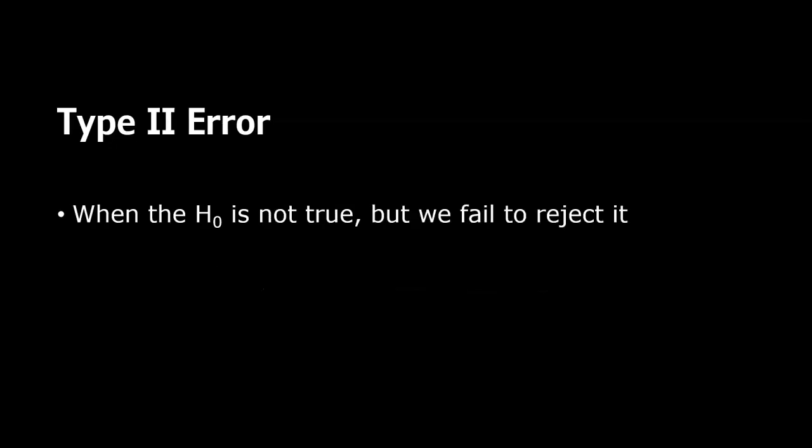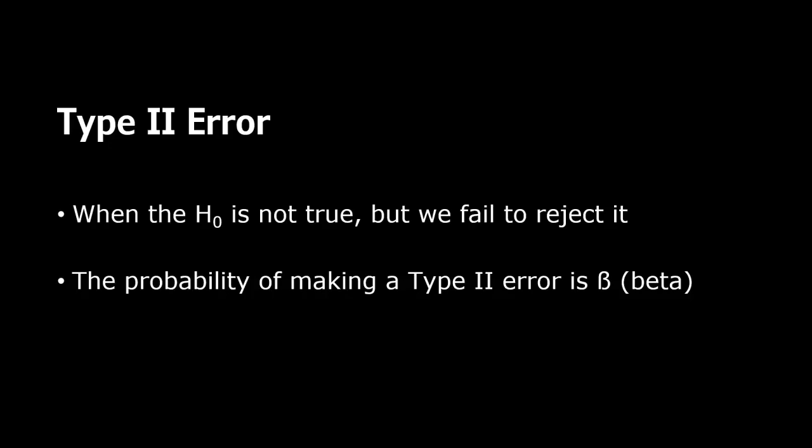Now a type 2 error is the opposite. It's when the null hypothesis is not true, but we fail to reject it. So in a case where we should be rejecting the null hypothesis, we fail to reject it, and that's when we have a type 2 error. Now the probability of making this type of error is beta.